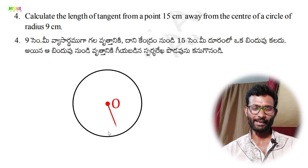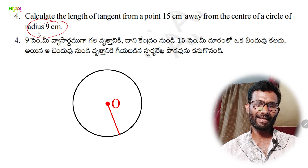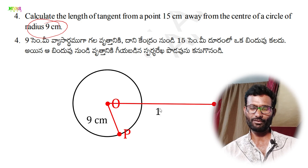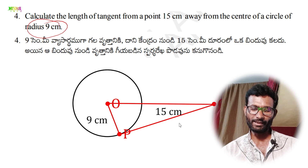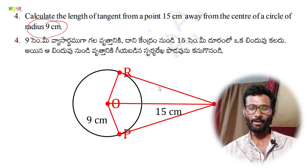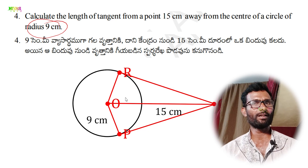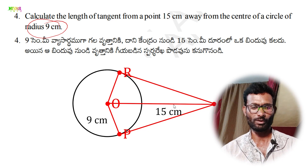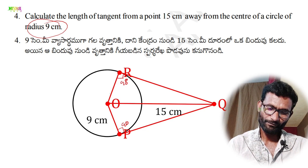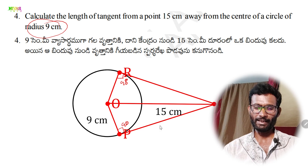We draw the circle with center O, radius OP = 9 centimeters. The exterior point Q is 15 centimeters from the center. PQ is the tangent. The angle at P is 90 degrees according to Theorem 1, making a right-angled triangle. We apply the Pythagoras theorem.